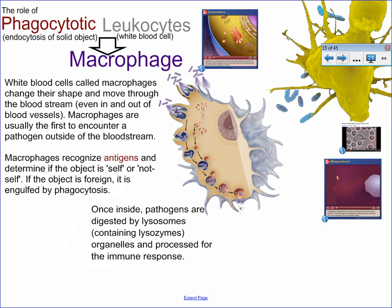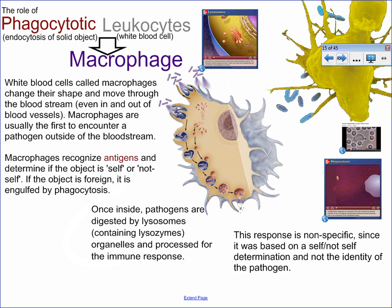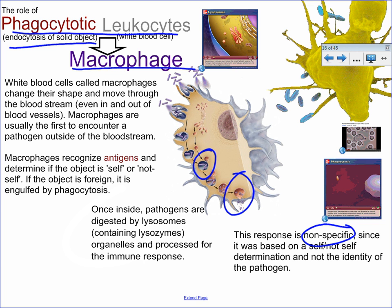The macrophage is usually the first thing that pathogens encounter if they're inside the bloodstream. Macrophages use antigens to recognize very simply if an object is self or not self — this is called a non-specific response. They ingest pathogens through phagocytosis, which is the endocytosis of a large object, then digest them using lysosomes, and eject parts of the dead, deconstructed pathogen. For that reason we call them phagocytotic leukocytes, though their more specific name is macrophage.